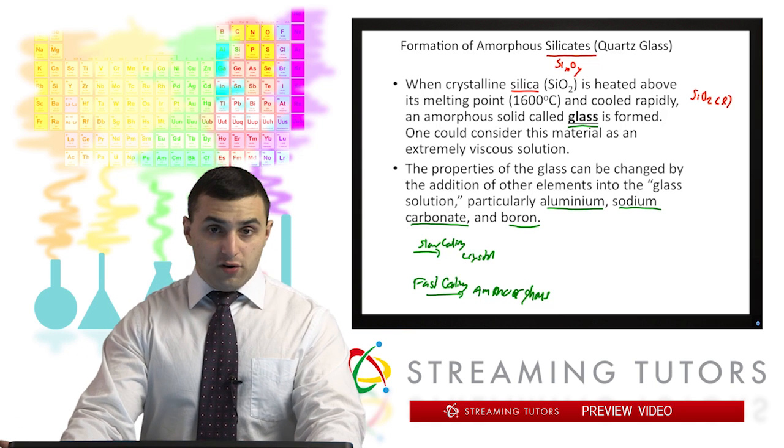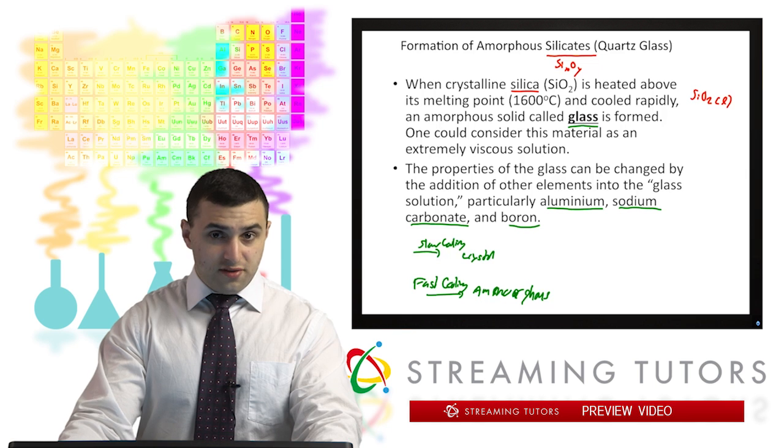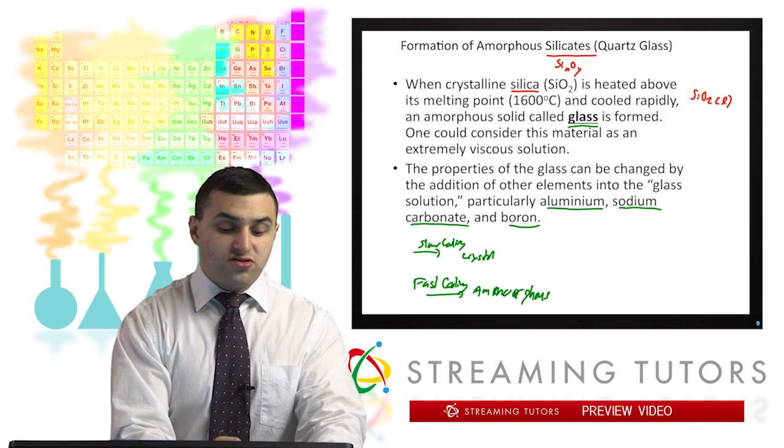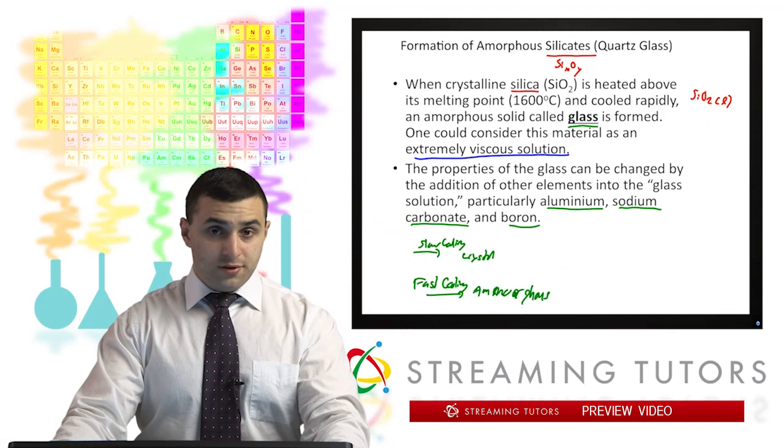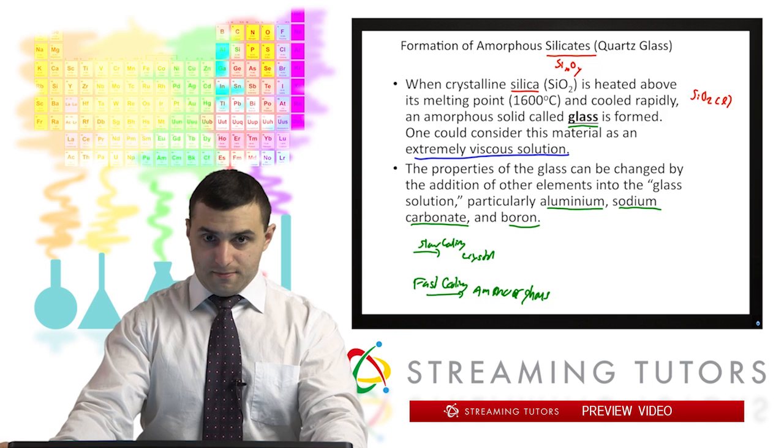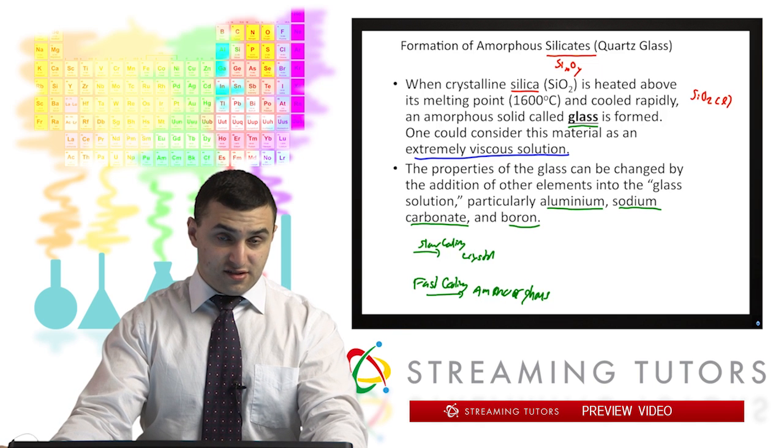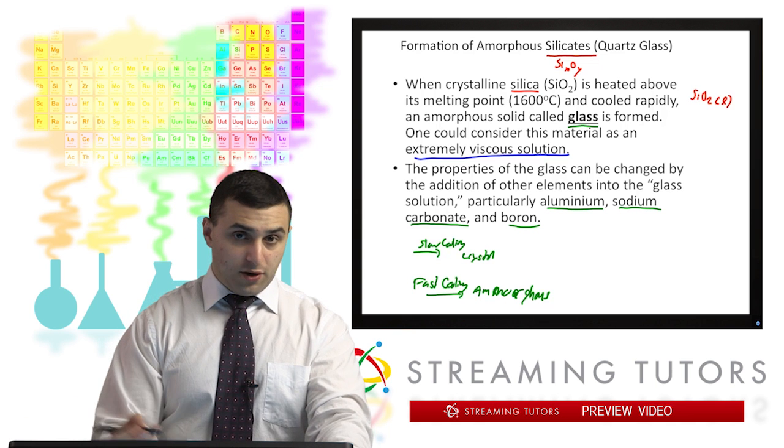One other thing that we should note is that this amorphous solid, we can also think of it as a solution that's extremely viscous. What I mean by that is, first off, viscosity is a measure of how difficult it is to move a solution, how liquid it is. If you look at honey, for example, that's an extremely viscous liquid because it's not as free-flowing as water. So if we took that to an extreme, we'd almost get something like glass, where glass is practically an immovable solution. So that's a technical way that we can look at an amorphous solid as just an extremely viscous solution. So we're not going to really talk much more about amorphous solids other than the fact that they form these glass materials, and that we form them by cooling things really quickly.